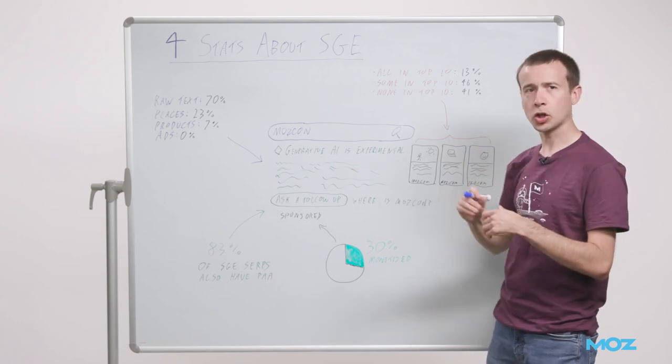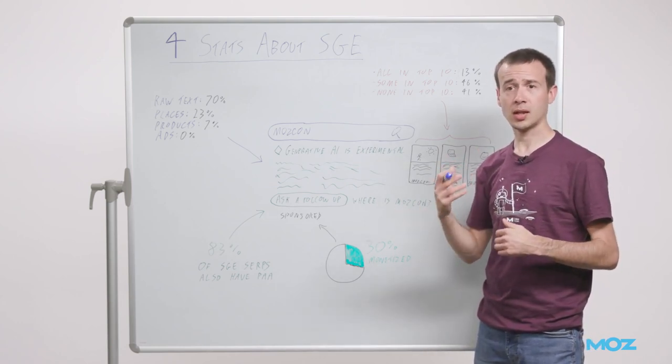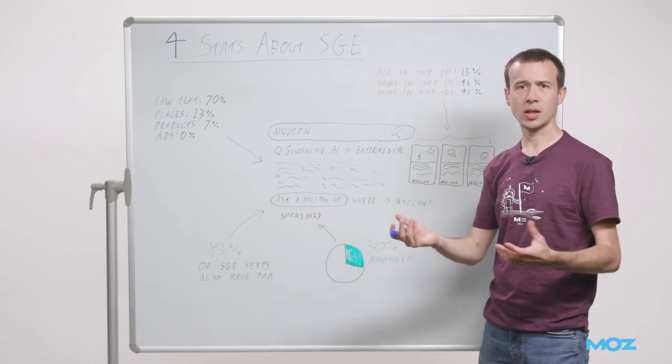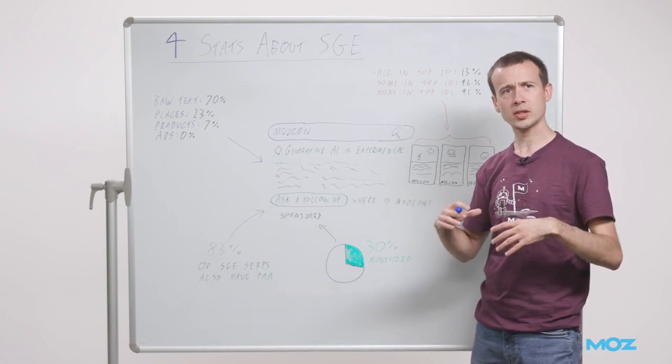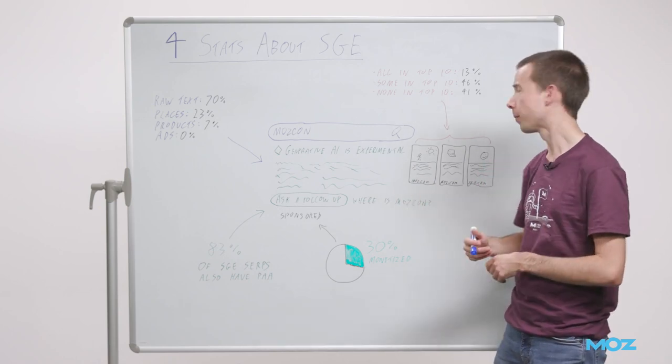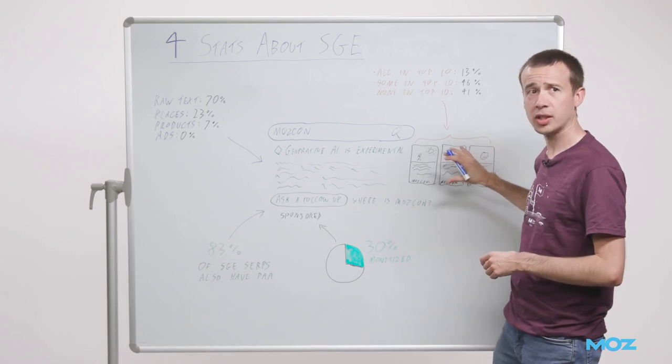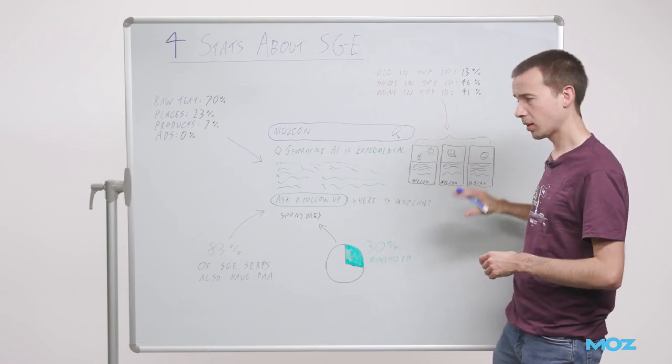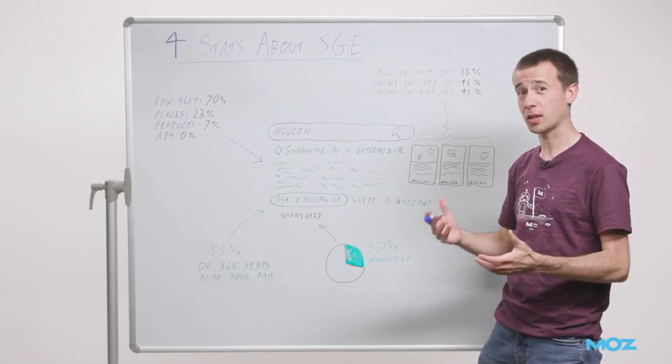This is the top few keywords from every MozCast vertical, so 100 SERPs in total tracked in the US on desktop. A relatively small-scale study, but enough to get an idea of what's going on. So yeah, 13% of SGE SERPs had 100% overlap between these three links and organic results beneath, which I think is surprisingly low.